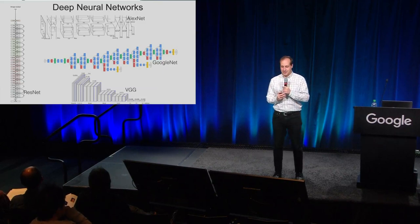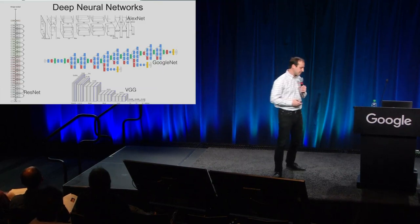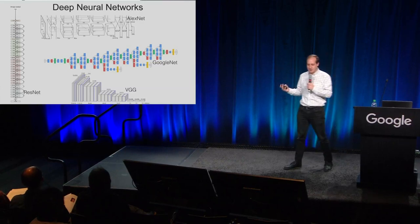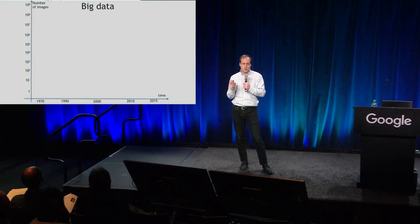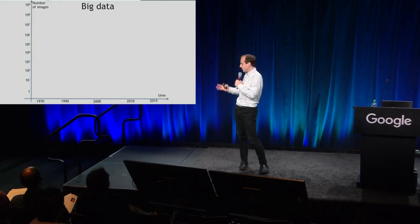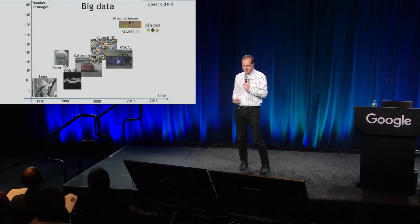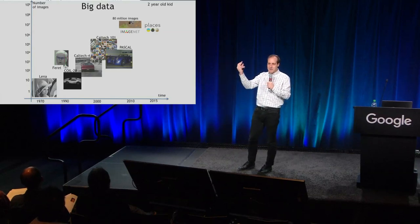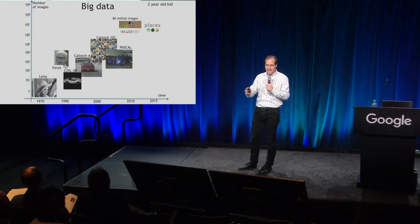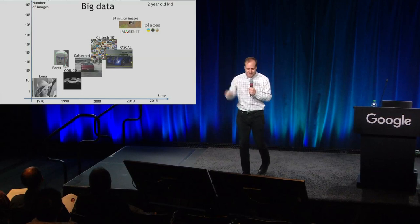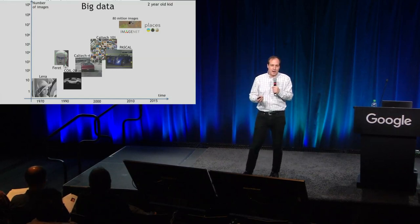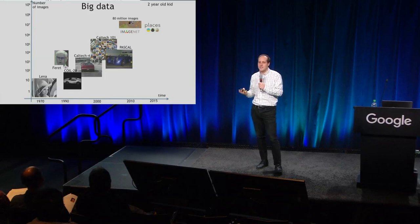One of the things that happened in recent years is the emergence of deep learning, which is making many things in computer vision work really well. Another thing is big data — now we have much larger datasets than before. If you plot dataset sizes according to time, computer vision datasets started in the 70s with one picture, and now we are almost hitting the point where you have the same amount of data that a two-year-old kid gets to see. We are really running out of excuses for it not to work.